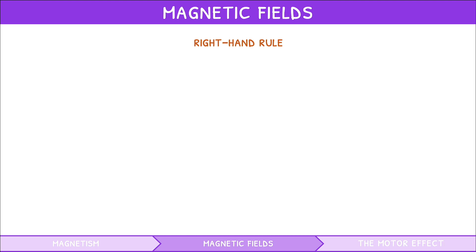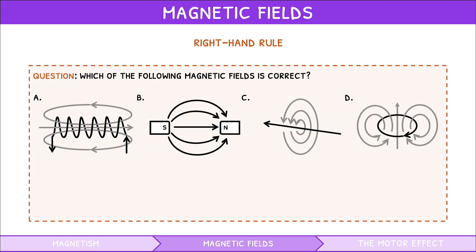Let's review this all with a practice question. Which of the following magnetic fields is correct? Remember that external magnetic moments always travel from the north pole to the south pole, and that in wires you use the right-hand grip rule. Therefore, the only one that adheres to these rules is option A.